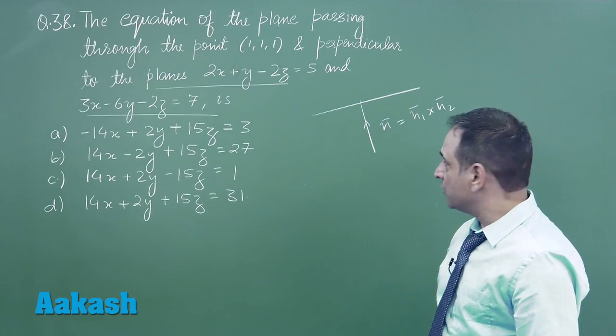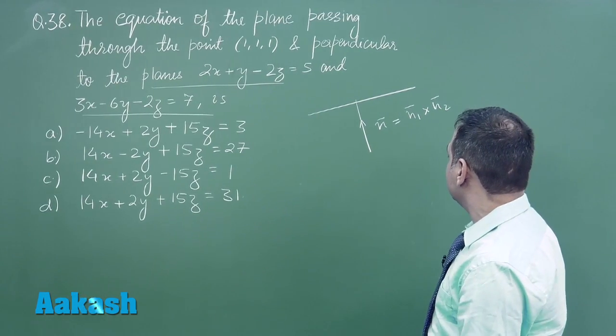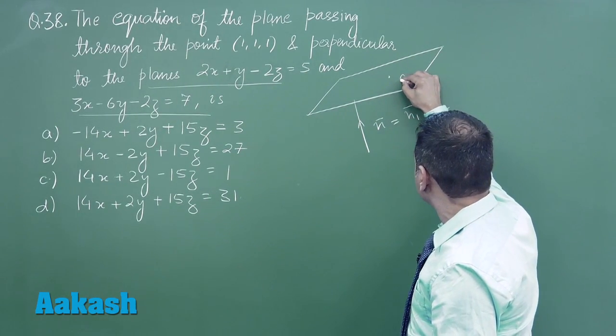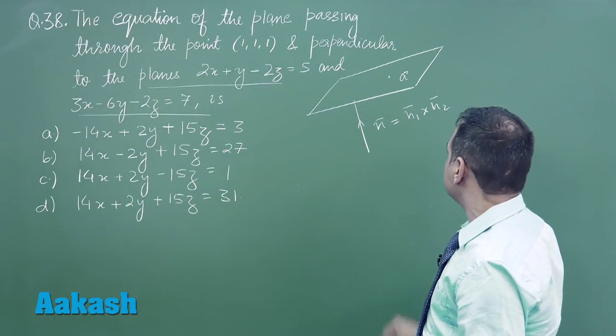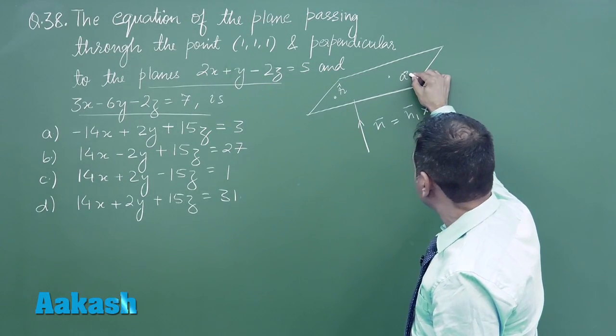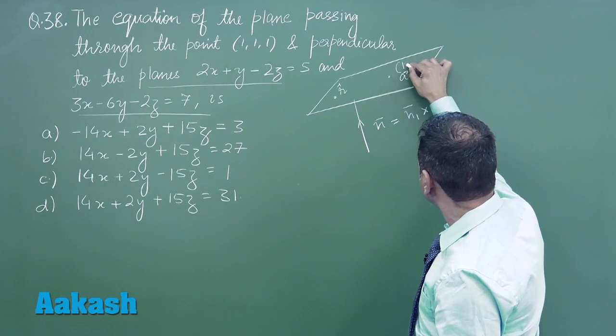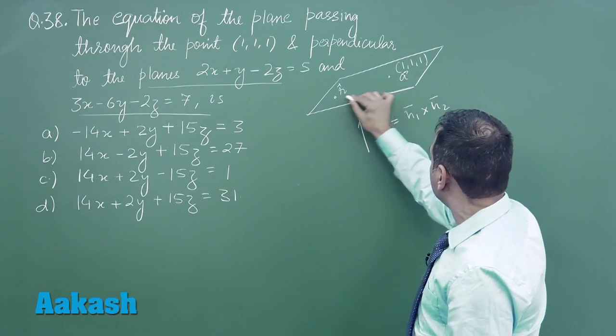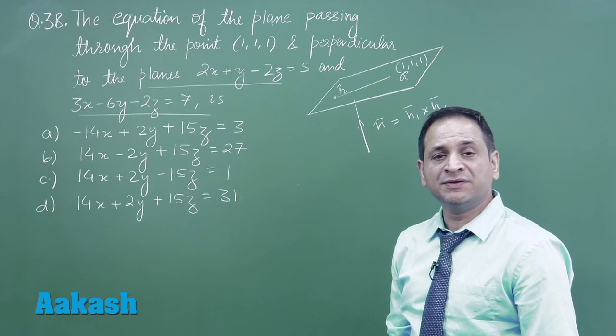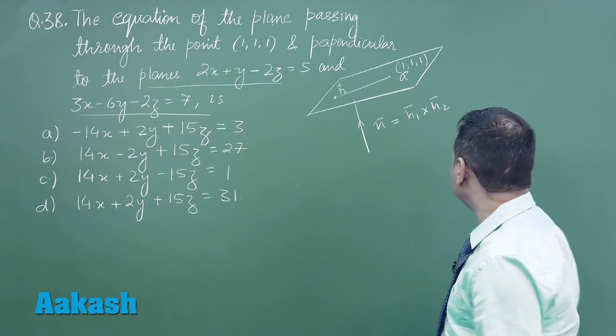Now we can very well understand that taking any point on this plane, say variable point r, and a given point a which is given to us, that is (1,1,1). Now this r minus a will always be perpendicular to n1 cross n2.